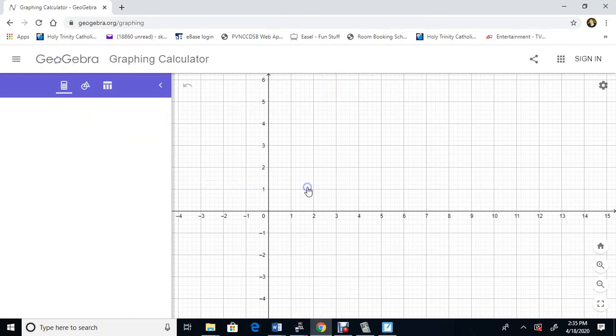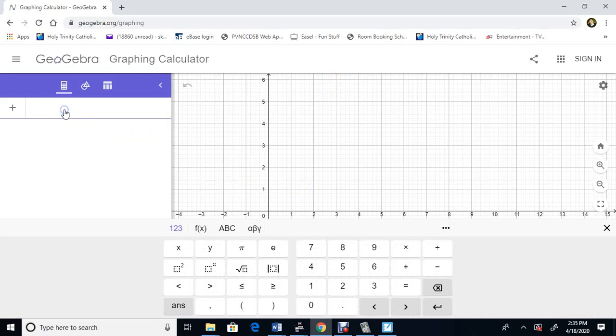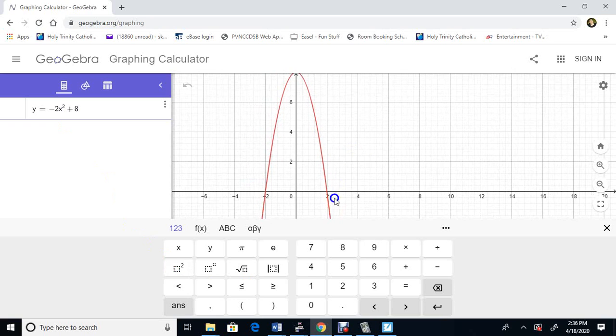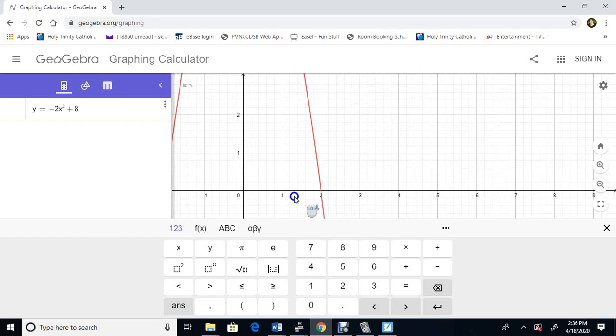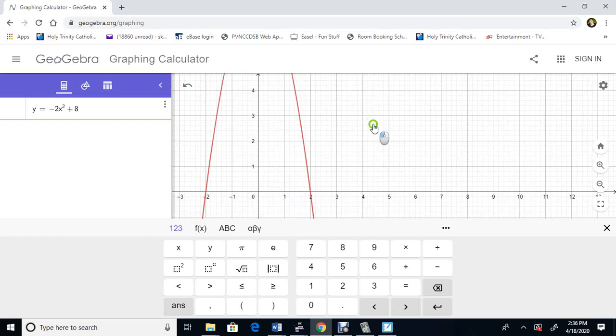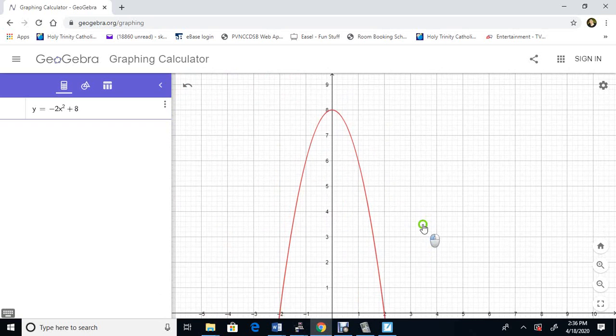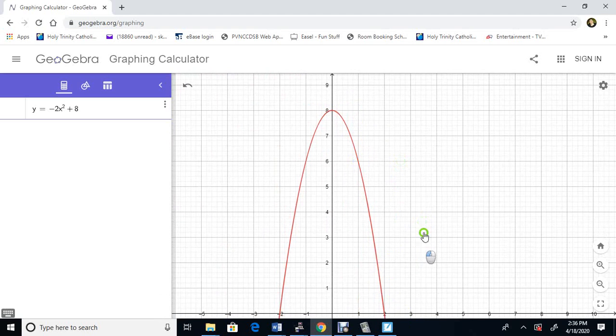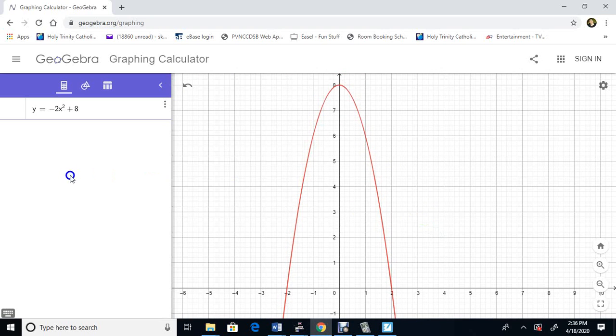Let's type a new one in: y equals negative 2x squared plus 8. There it is. Look, the x-intercepts are the same as ours, 2, negative 2. Over here it's like over 1, down 2, over 1, down 6. So there's our graph, we did it right.